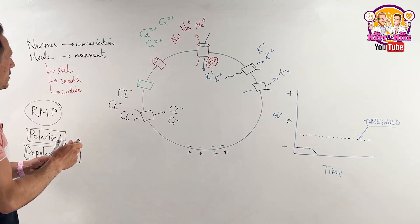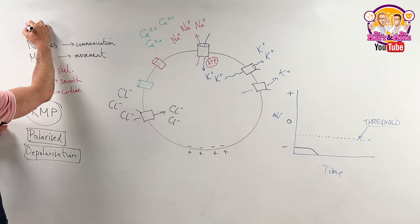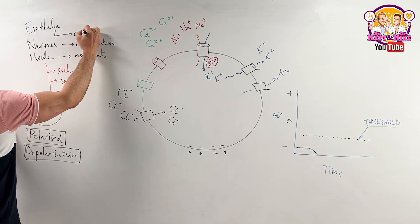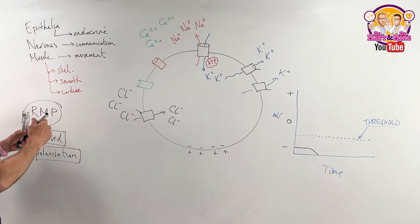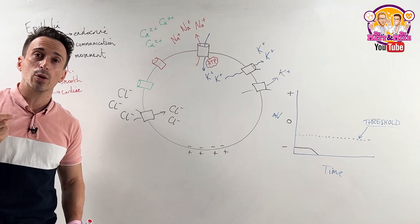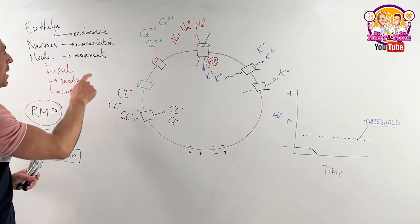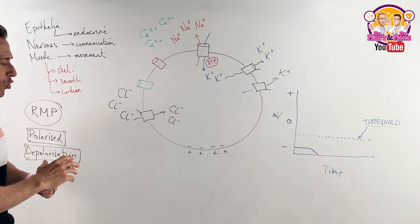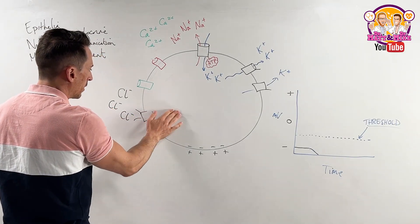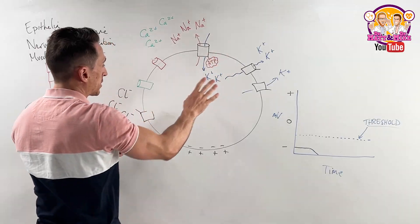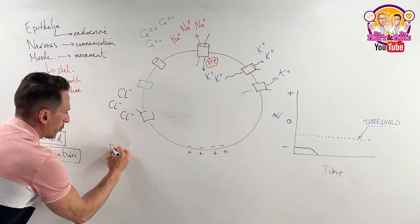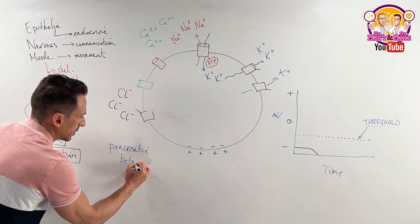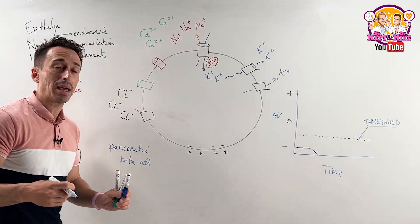Finally, we need to think about another tissue type that sits under the banner of epithelial tissue: endocrine tissue. Endocrine tissue can release chemicals called hormones into the bloodstream. An argument could be made that endocrine tissue is also excitable and works similarly. For example, let's say this cell is a pancreatic beta cell — the cells within the pancreas that make insulin.